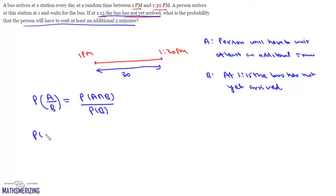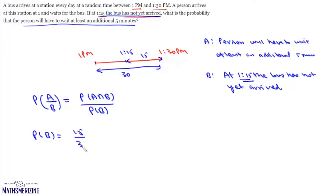First we will calculate probability of B. Probability of B is that at 1:15 the bus has not yet arrived. If the bus is not here at 1:15, then the bus will be expected at any time between 1:15 and 1:30. So the probability that the bus has not yet arrived at 1:15 is given by this favorable length, which is 15, upon total length, which is 30. So this probability is 15 by 30, which is 1 by 2.